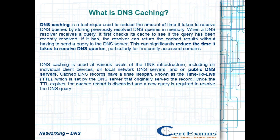Cached DNS records have a finite lifespan, known as the time-to-live (TTL), which is set by the DNS server that originally served the record. Once the TTL expires, the cached record is discarded and a new query is required to resolve the DNS query.